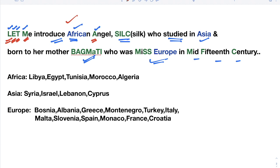'Silk — who studied in Asia' — these are the countries in Asia. S-I-L-C: S = Syria, I = Israel, L = Lebanon, C = Cyprus. These four letters give you all the Asian countries bordering the Mediterranean Sea.